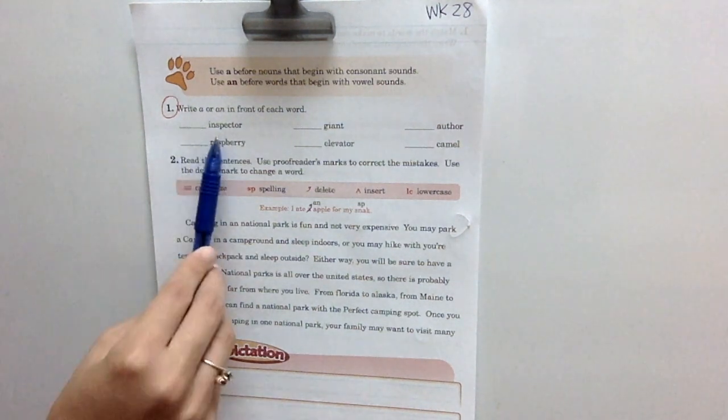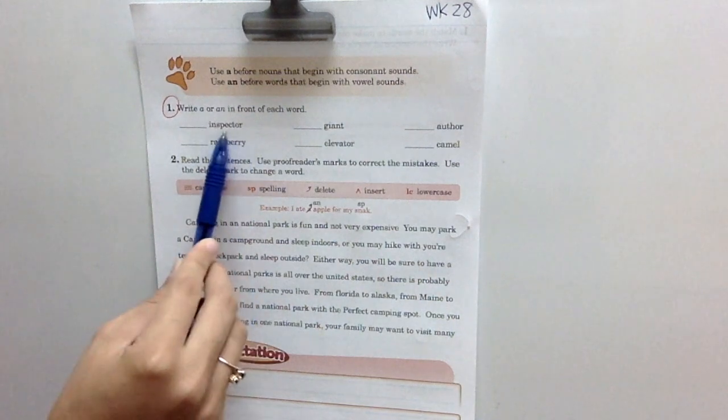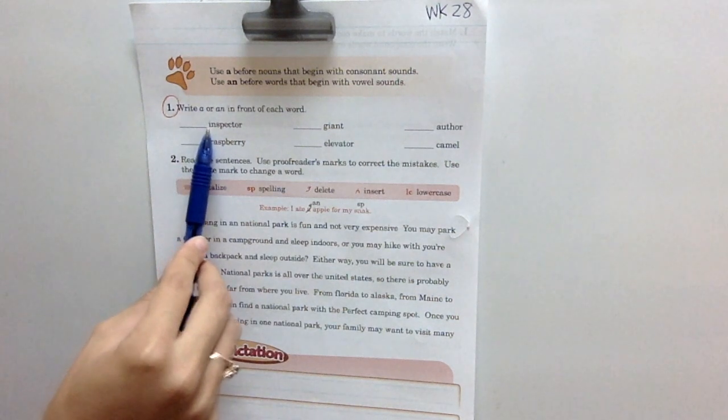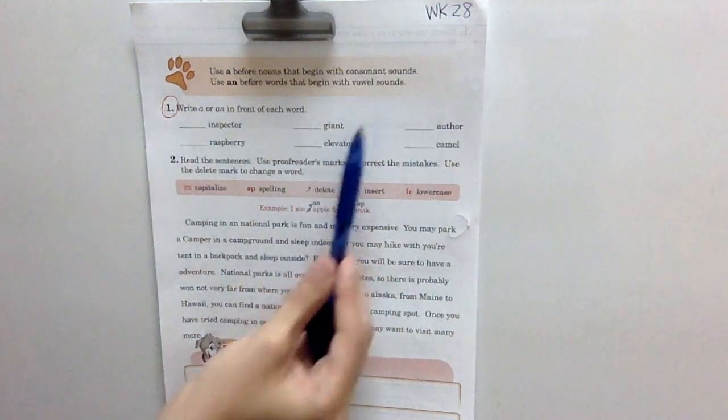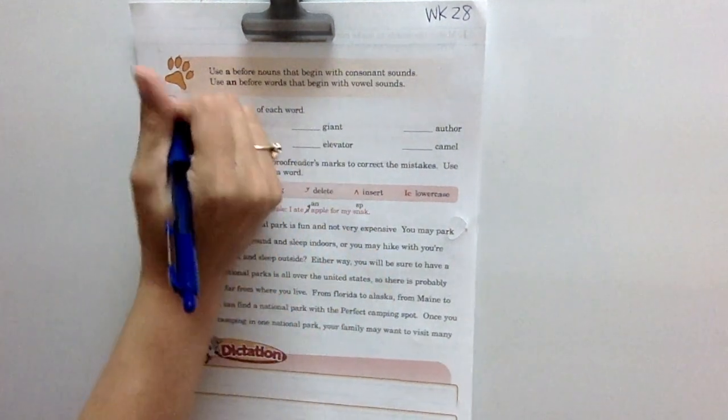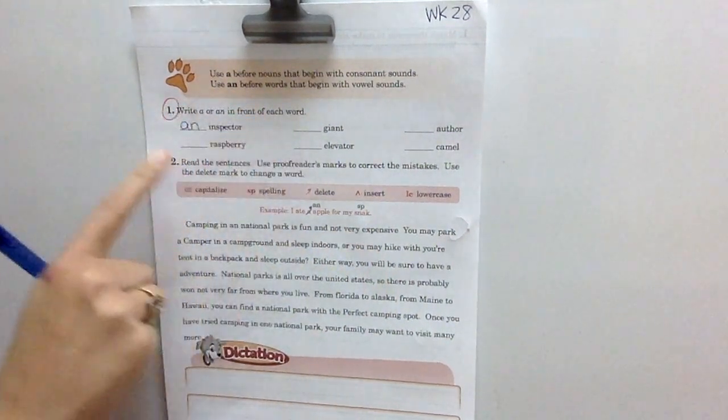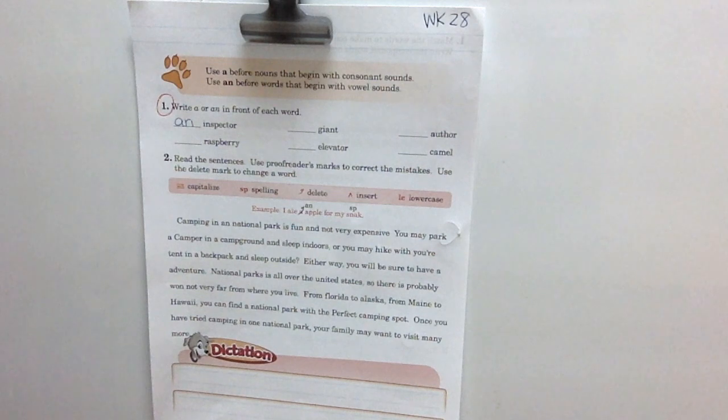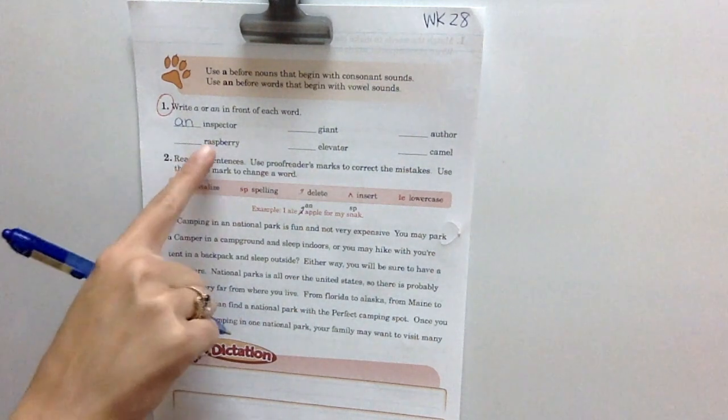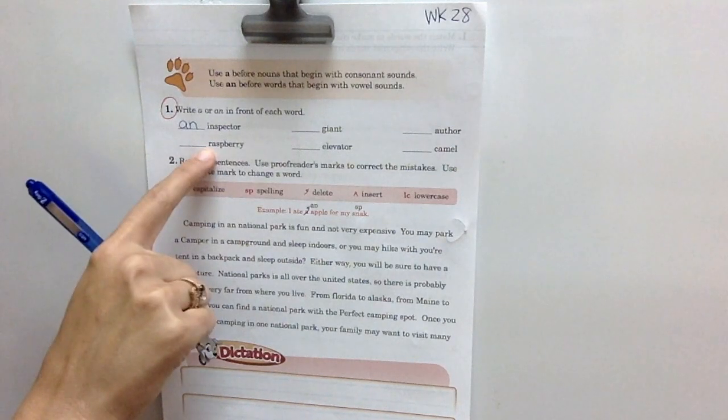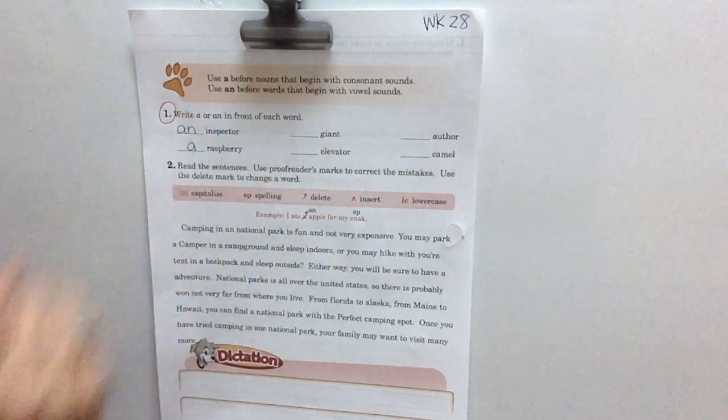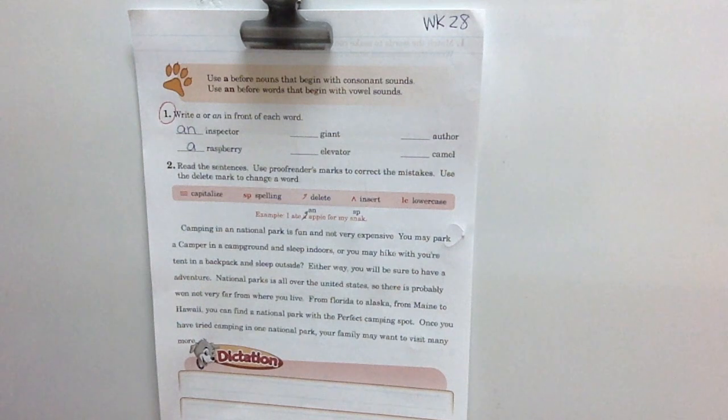So let's look at the word, this first word is inspector. So we need to decide, is that i the sound of a vowel or the sound of a consonant? It's the sound of a vowel. So with vowel sounds we use the word an. So this would say an inspector instead of a inspector. We would say an inspector came over to my house. Raspberry, raspberry. That r is a consonant sound. So we would just say a raspberry. I ate a raspberry. We would not say I ate an raspberry. That already sounds kind of weird, doesn't it?